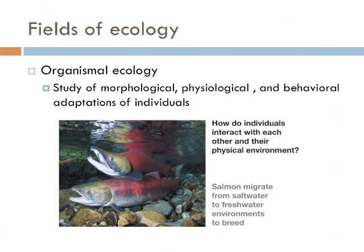Organismal ecologists look at how morphological differences among individuals in a population affect their fitness. In this way, it can be said that Charles Darwin was an organismal ecologist, but he probably wouldn't have called himself that.